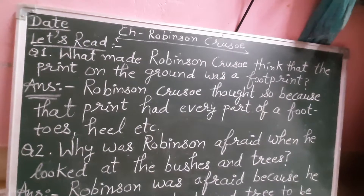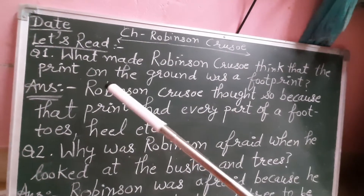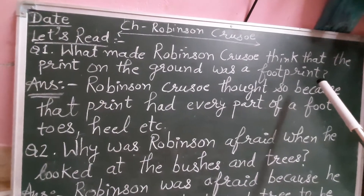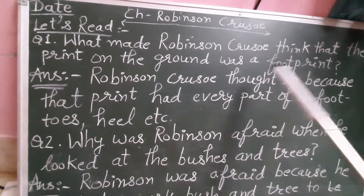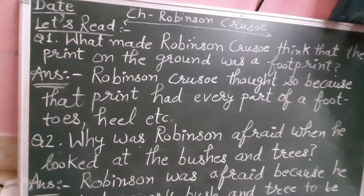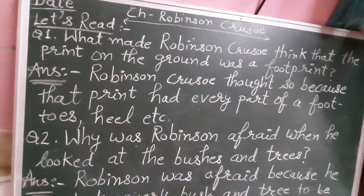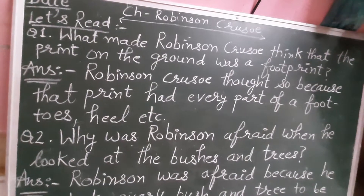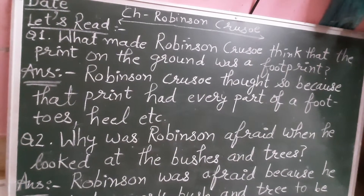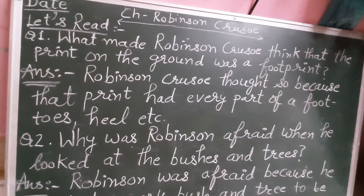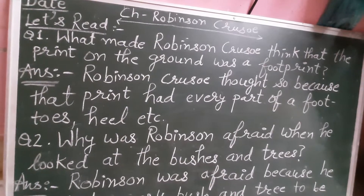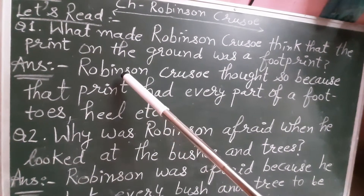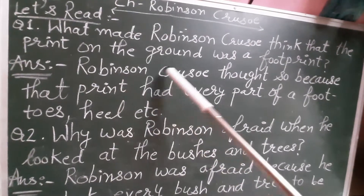Kya chiz thi jis se Robinson Crusoe ne socha ki jo print hain ground pe wo footprint hain — ek pair ka nishan? Kis wajah se socha? Toes dikhari thi, matlab jo ungliyan hoti hain woh dikhari thi, alag se, aur heel ka nishan, aadi ka nishan dikhari tha, aur middle part wagera dikhari tha — pura pair dikhari tha.